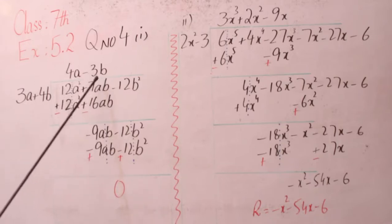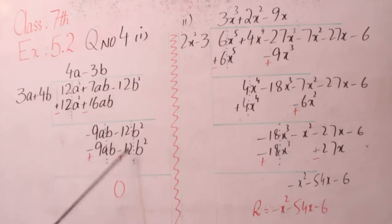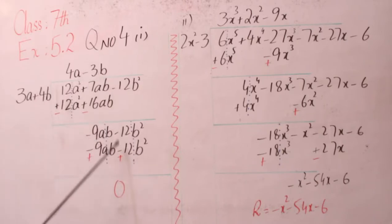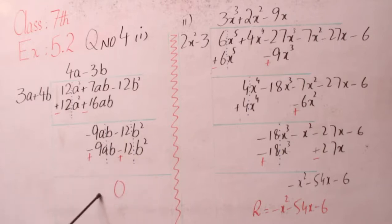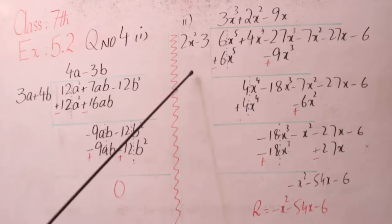اب 4b² کو 3b سے multiply کیا: plus minus = minus، 3×4=12، b×b=b²۔ ان کے sign change کر لیے، یہ plus ہو کے cut جائے گا، یہ بھی plus ہو کے اس سے cut جائے گا۔ تو answer ہمارے پاس 0 آ گیا یعنی کہ اس کا remainder جو ہمارے پاس 0 بچتا ہے۔